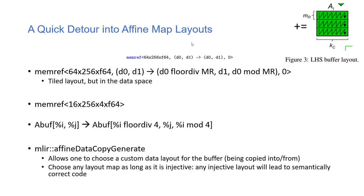The author takes a brief detour to talk about layouts and how MLIR memrefs can express them. A memref can be seen as a template with three parameters: dimension sizes and base type, scale parameters, and the memory address. So this is a 64×256 matrix with 64-bit floating-point base type. You have two dimensions mapped via a transformation that expresses the layout — in this case, something like tiling using floor division followed by modulo.